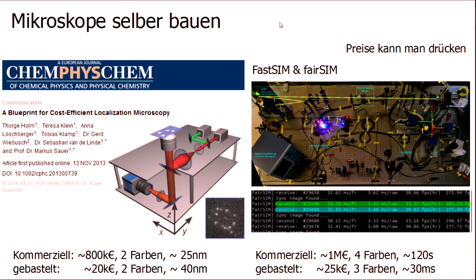The same goes for SIM — FastSIM is an idea for how to do structured illumination microscopy cheaply. A commercial SIM microscope costs about one million euros, does four colors, and needs minutes for image reconstruction. Or you can use open free software and buy the parts — not quite as polished, but much cheaper: €25,000, three colors, and 30 milliseconds reconstruction with FairSIM. And it's just wonderful.